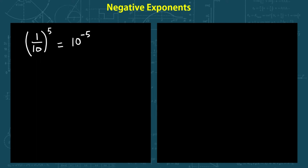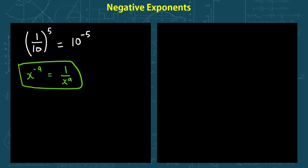The rule is very simple: x to the power of negative a is equal to 1 over x to the power of a. This will become simpler to understand when we work with some examples.